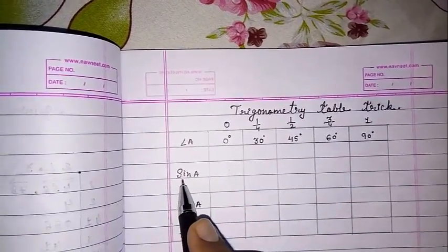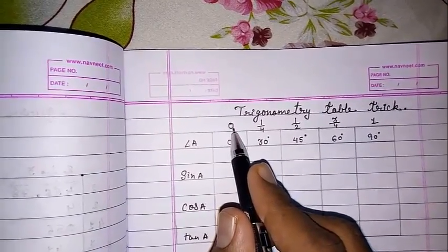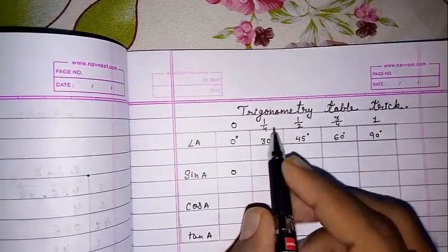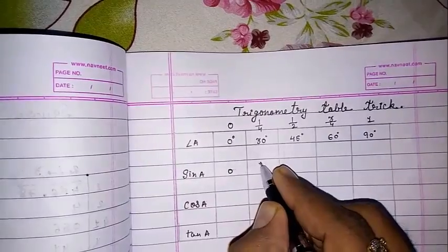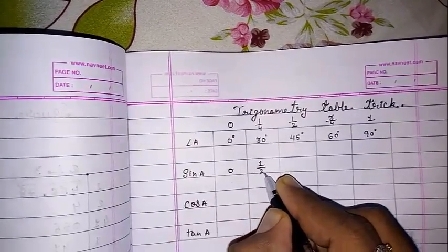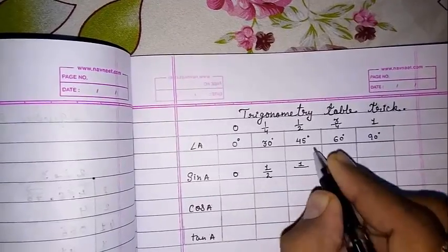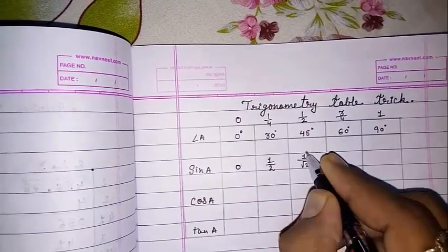Now for finding the value of sine 0 degrees, we have to find the root of 0. Root of 0 will be 0. Root of 1 by 4 will be 1 by 2. Root of 1 will be 1, and root of 2 we cannot find, so it's 1 by root 2.